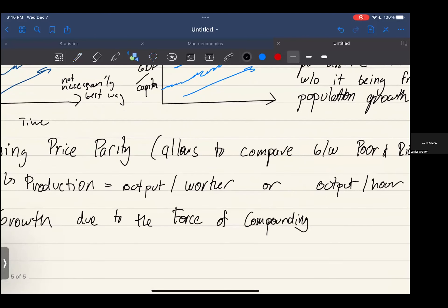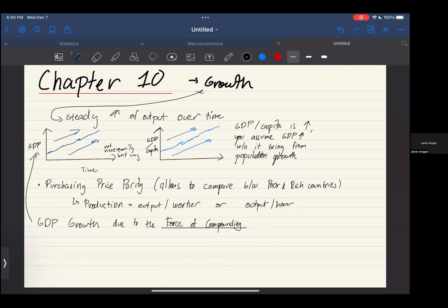Going back to GDP, growth happens due to something called the force of compounding. What I understood this means is that assets grow on each other.